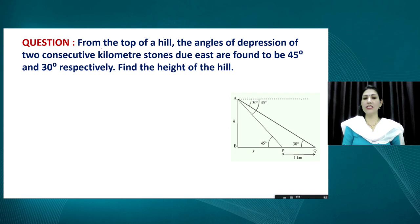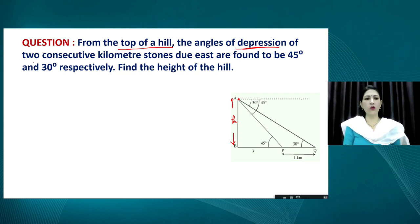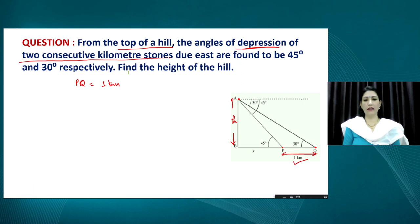This is a question we discussed in our previous session — let us go over it once more. From the top of a hill (AB represents the height of the hill), the angle of depression of two consecutive kilometer stones at points P and Q is observed. The distance PQ equals 1 kilometer. We need to calculate the height of the hill, which is AB.